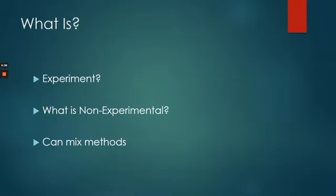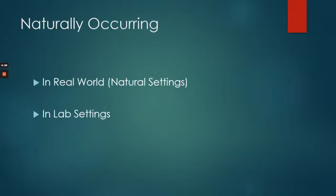A lot of you probably had that type of design for your experimental studies for lab number two. Typically, since we are doing things that are not manipulated in non-experimental studies, we're looking at things that are naturally occurring. Those predictor variables are naturally occurring — we're not manipulating them. One thing I want to emphasize is that this can be studied in natural settings in the real world, but you can also do it in a lab.